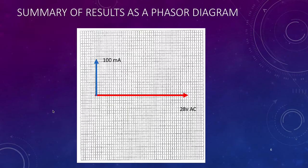So if we're going to draw that as a phase diagram, it would simply look like this. The voltage would be on the horizontal at 28 degrees, the voltage across the capacitor. And our current is going to be at 90 degrees lead.